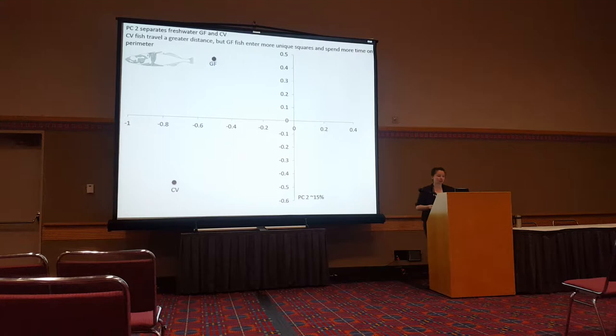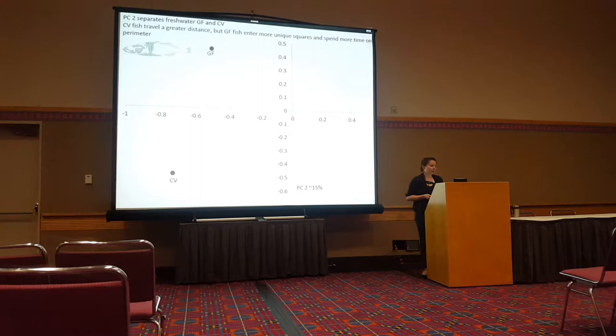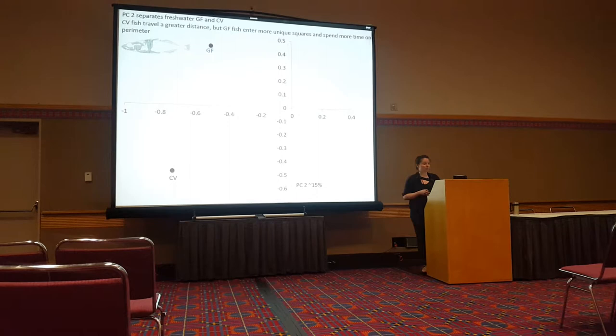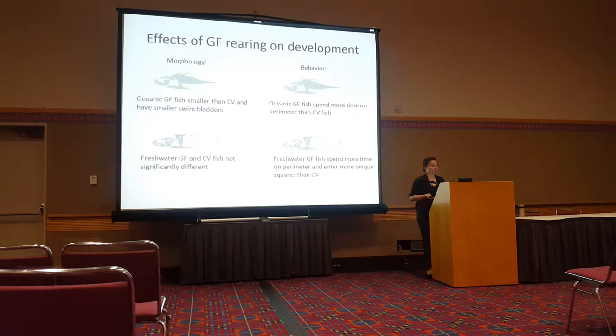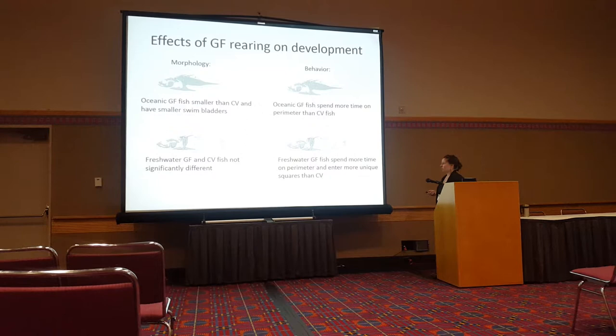For freshwater treatments, PC2 accounts for about 15% of overall variation and separates conventional from germ-free fish. Conventionally reared freshwater fish travel greater distance, but germ-free fish — similar to the oceanic population — spend more time on the perimeter and also enter more unique squares than conventionally reared individuals. In summary, oceanic germ-free fish are smaller with smaller swim bladders, while freshwater fish show no morphological differences. Both oceanic and freshwater germ-free fish spend more time on the perimeter, and freshwater germ-free fish also enter more unique squares.